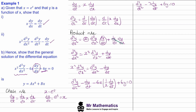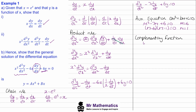Remembering our work on differential equations previously, we can now use the auxiliary equation: m² minus 7m plus 6 equals zero. We can factorize this to get (m minus 6)(m minus 1) equals zero. So our solutions are m equals 6 and m equals 1. Substituting these roots into our complementary function, y equals A·e^(6t) plus B·e^(t).